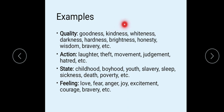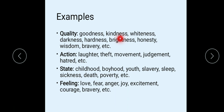For examples, as a quality: goodness, kindness, whiteness, darkness, hardness, brightness, honesty, wisdom, bravery, etc. These are examples of abstract noun as a quality. You can't see the goodness of any person — you can only feel it. Similarly, kindness you can only feel. So these are examples of abstract noun.